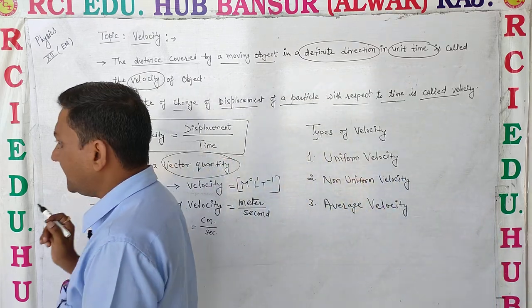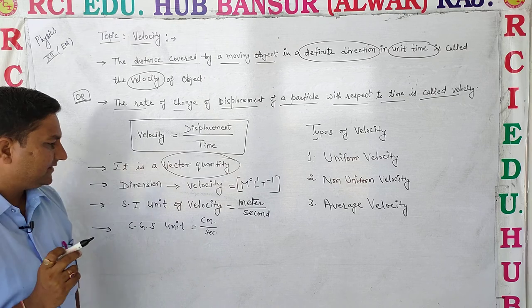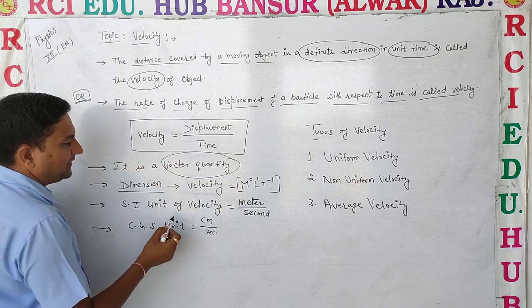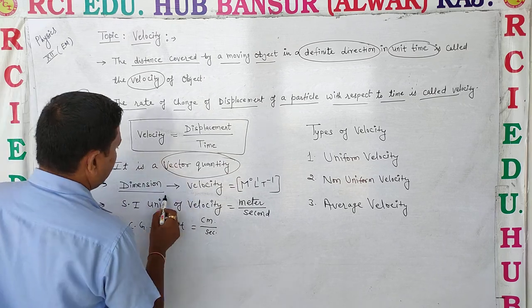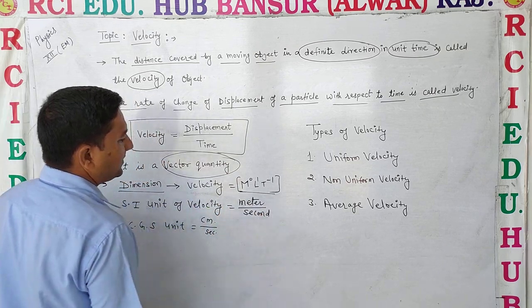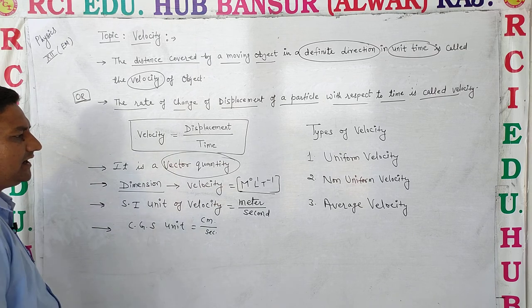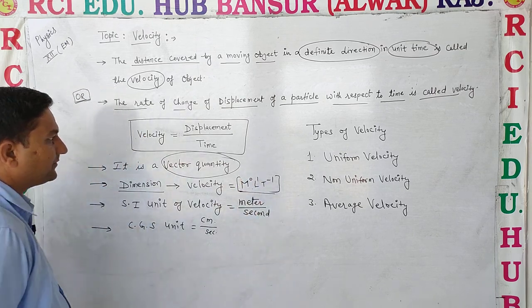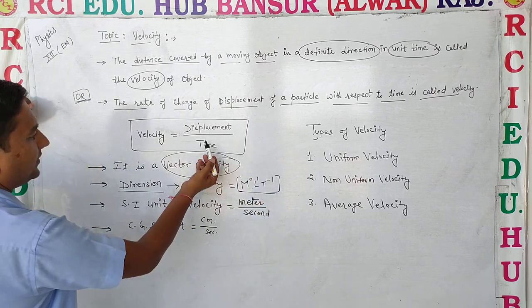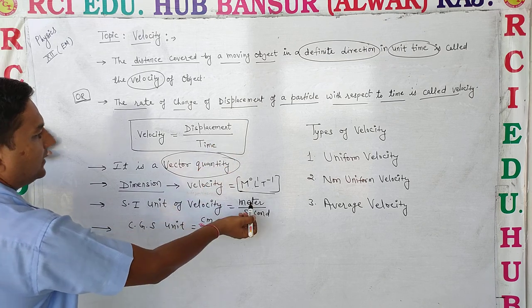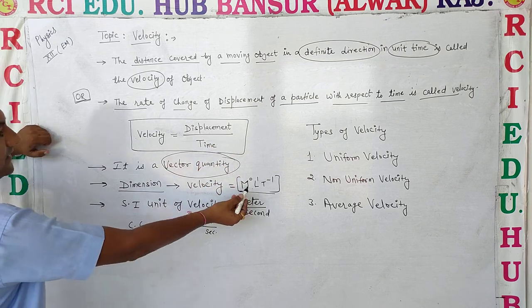Next is dimension. The dimension of velocity is M⁰L¹T⁻¹, same as the dimension of speed.